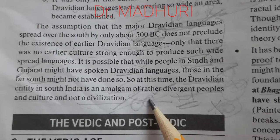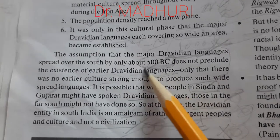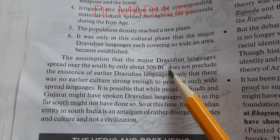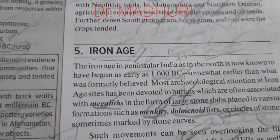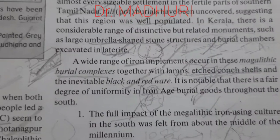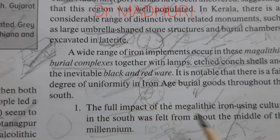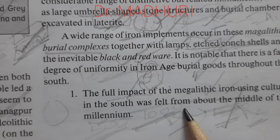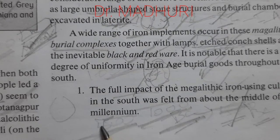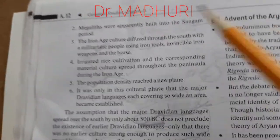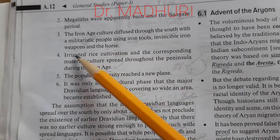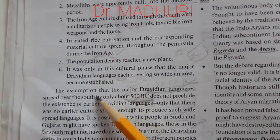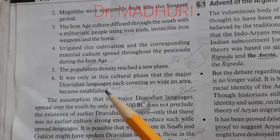Some important characteristics of Iron Age include: usage of iron tools by military people, rice cultivation using iron implements, growth in population density, and the emergence of Dravidian languages in the South from 500 BC. Though Iron Age began from 1000 BC, the full impact of the megalithic Iron Age was felt from 500 BC — the middle of the millennium. This was about Iron Age, particularly focusing on South India.